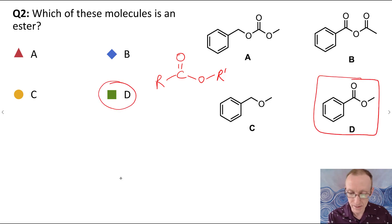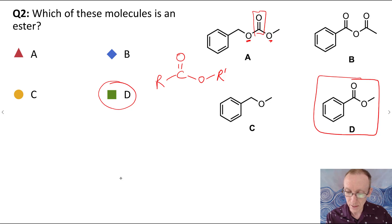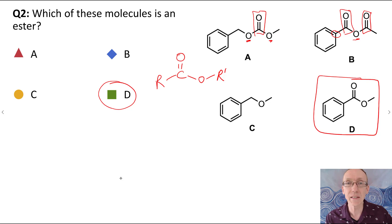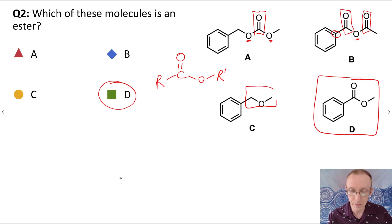Looking at A: it has an acyl group, but then it has two oxygens attached to that acyl group, so that doesn't fit. B has an acyl group attached to one R group and attached to an oxygen, but that oxygen doesn't bond to a simple R group — it's bonded to another acyl group. So that makes it an acid anhydride, which is not an ester. And then C has two R groups attached to an oxygen and no acyl groups, so that must be an ether.